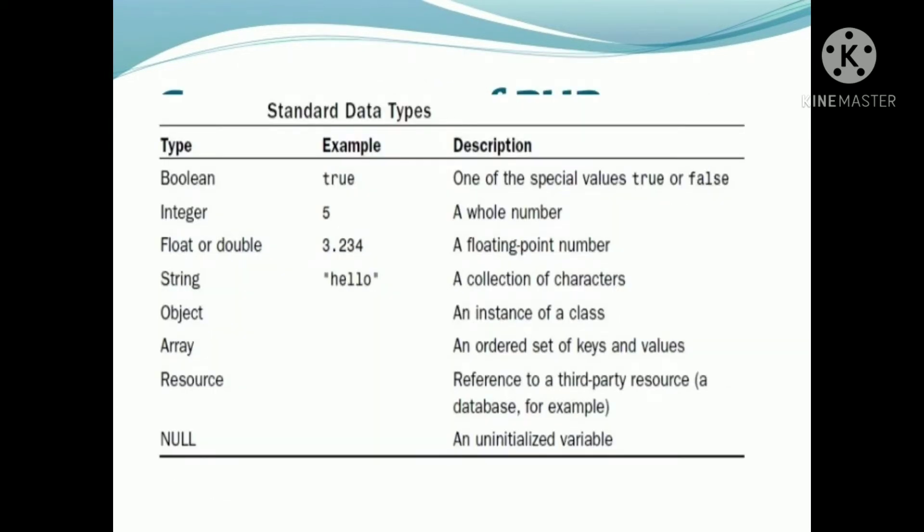There are eight standard data types. First, boolean. Then integer. Then float or double. String. Object. Array. Resource. And null.